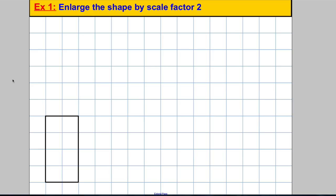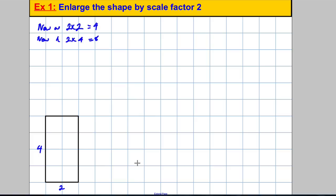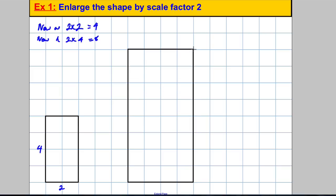Let's try an example: enlarge the shape by scale factor 2. We've got a rectangle with width 2 and height 4. The new width will be 2 × 2 = 4, and the new height will be 2 × 4 = 8, giving us a 4 by 8 rectangle. So we draw a rectangle that is twice the width and twice the height of the original.